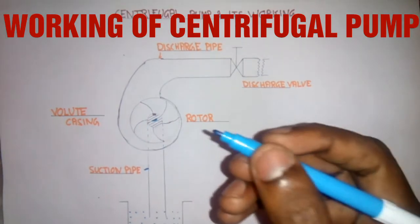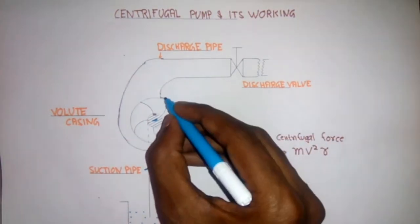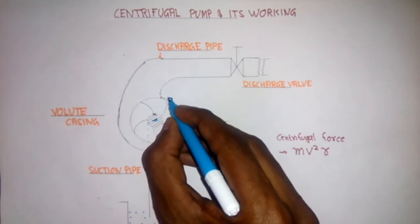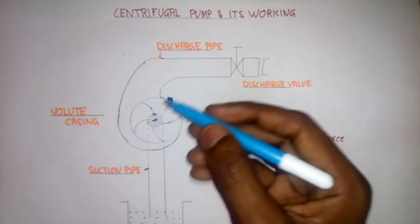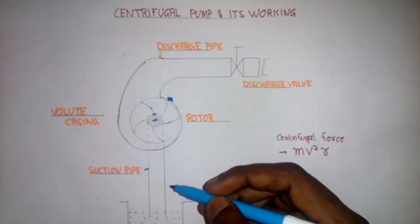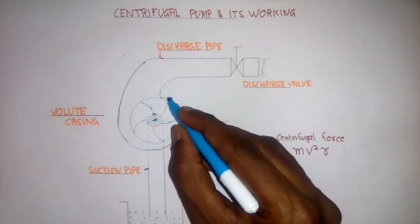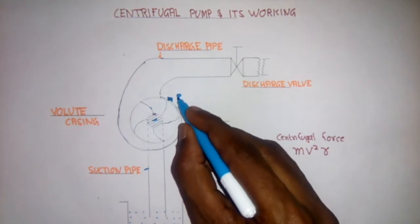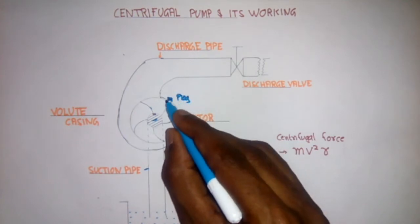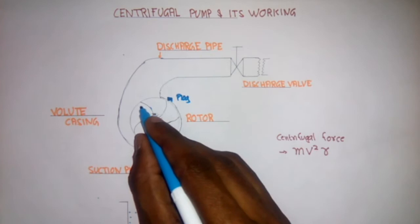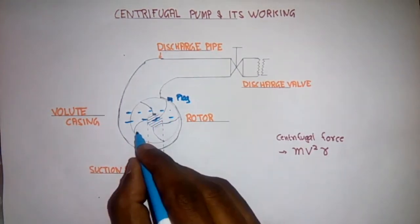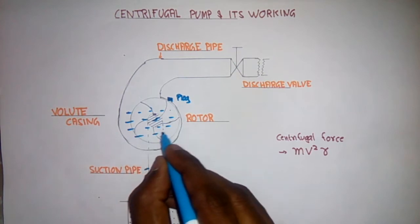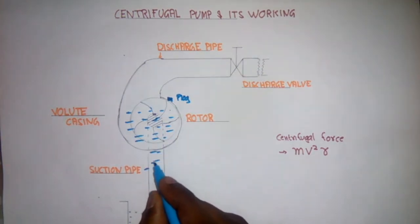As I already stated that the centrifugal pump requires water priming. The priming means its casing and suction side need to be filled with the water. For that we have one plug on casing. We will open that and fill that casing with the water so the air is removed from the casing and the suction side.